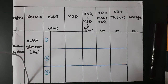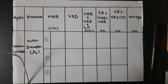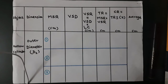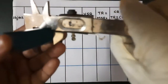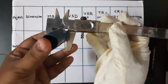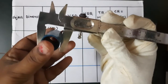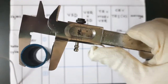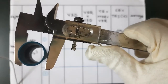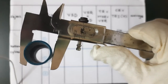Now let us see the next dimension — the outer diameter of the given hollow cylinder. The same table applies: MSR, VSD, VSR, total reading, corrected reading, and average. We will take 3 readings. We take the Vernier Caliper and use the lower jaws for fixing the object. The cylinder is fixed in the lower jaws and we are determining its outer diameter.